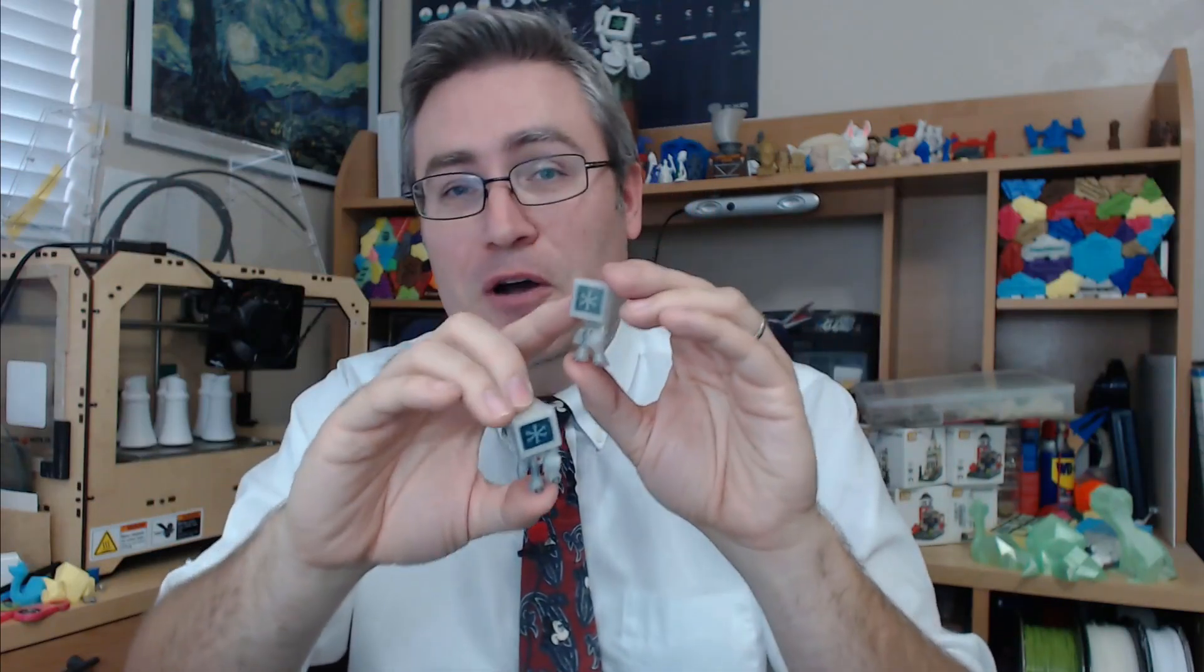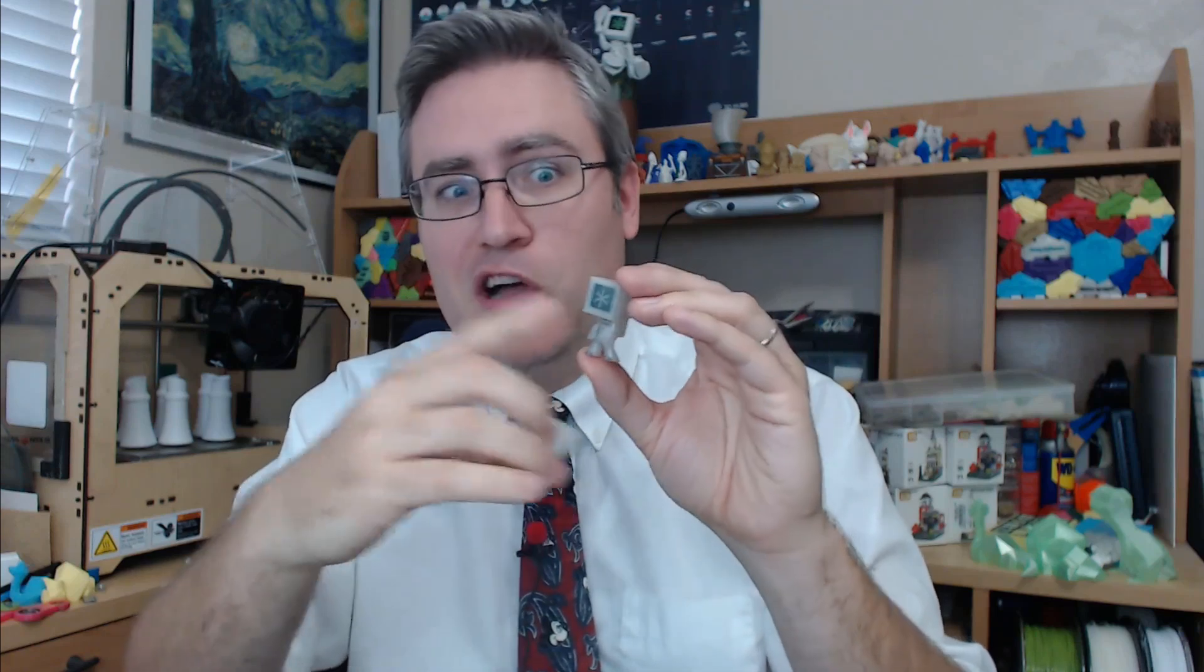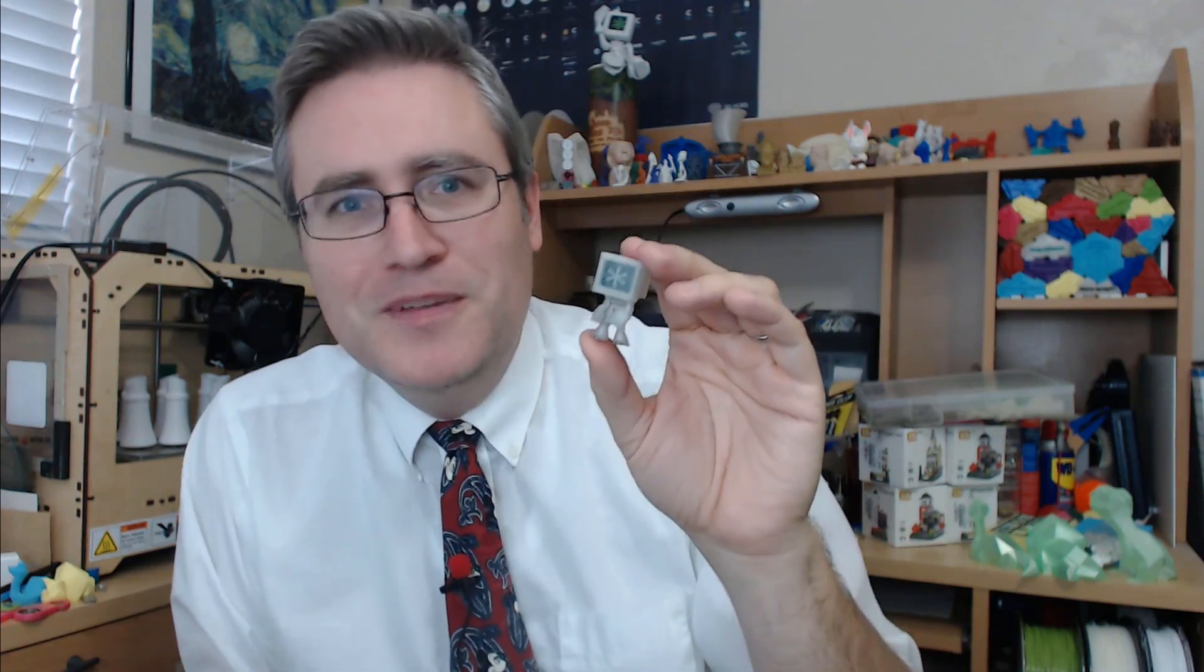So there we go. I just learned something. Draft mode is more than just layer height. It's also color depth. I said, this looked like I was printing it in draft mode. Well, I did. I printed it at 0.2 millimeter layer heights. You need to print at 0.1 to get the full effect of the color.